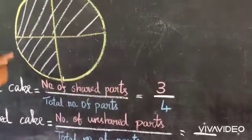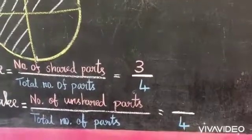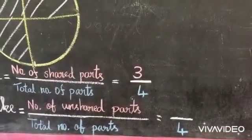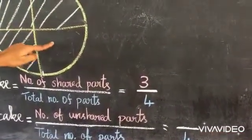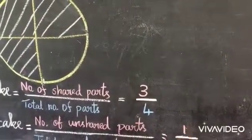How many parts are there? Yes, four. So four is the denominator. How many parts are unshared here? Yes, one. So one is the numerator.